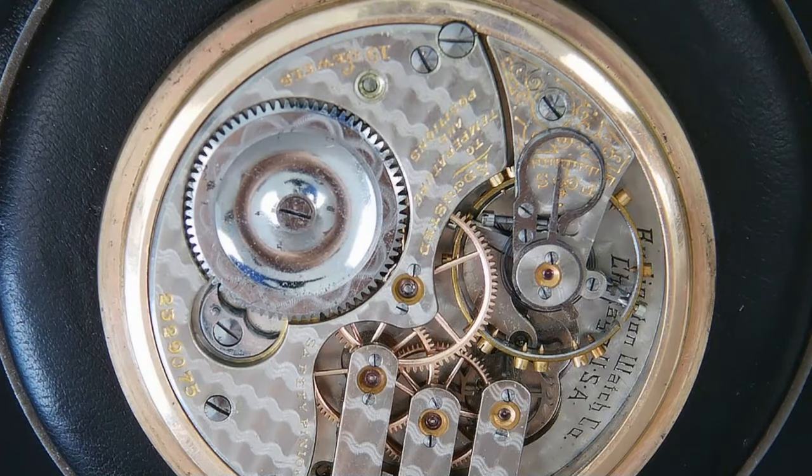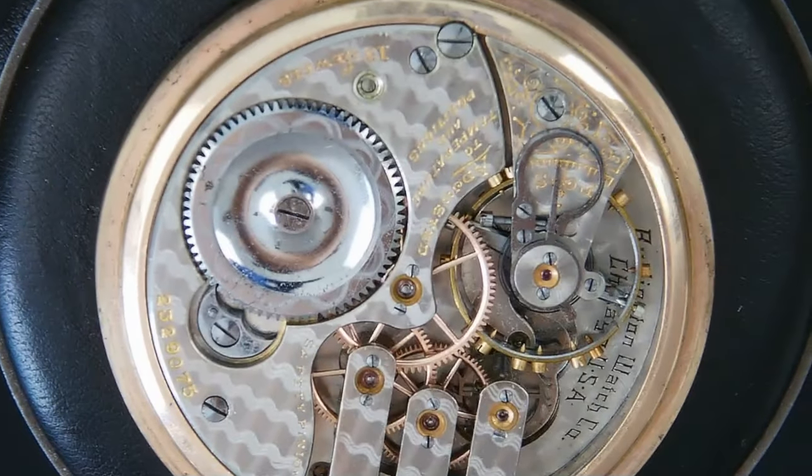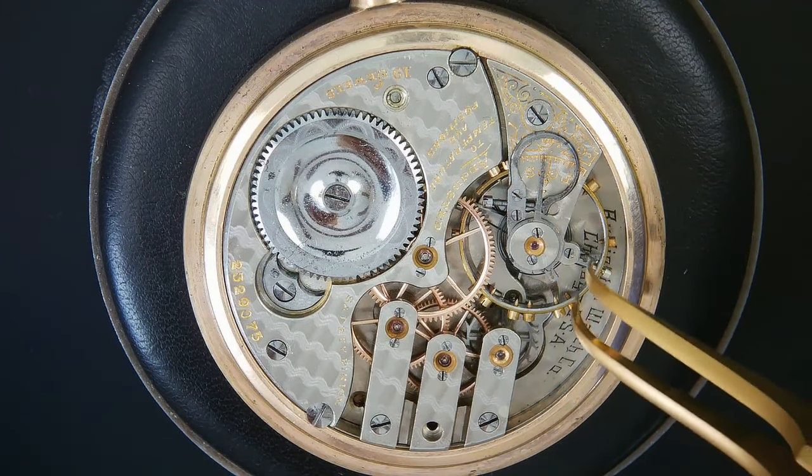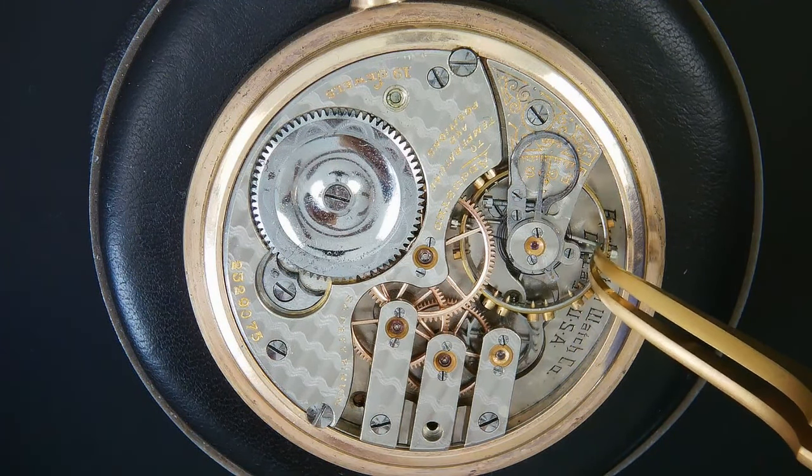This is a Getty model and right away we can see some of its distinguishing features. The beautiful crescent shaped click and the ratchet wheel sitting solo on the barrel bridge.